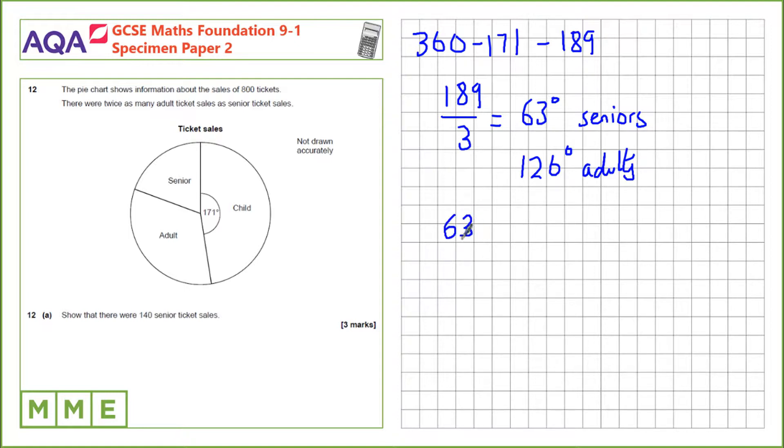Next, we take 63 degrees, divide it by the total number of degrees in the circle. That's the fraction of the total that seniors account for. And then we'll multiply by the number of tickets sold, 800, which gives us 140 senior ticket sales.